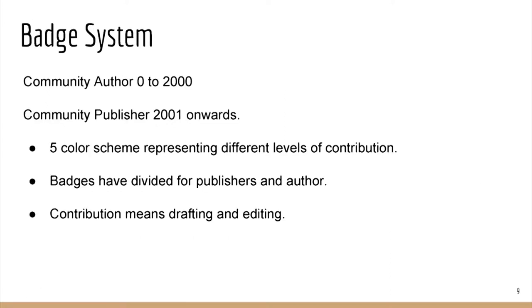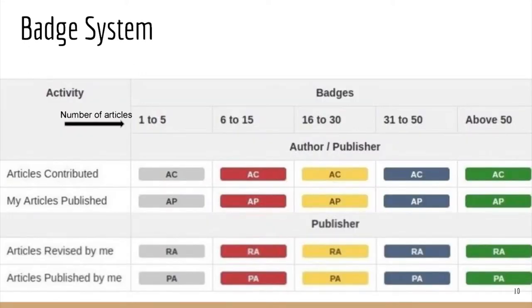Coming to the batch system — we implemented this to encourage users to contribute more. If a user's reputation ranges from 0 to 2000, they are considered an author; beyond 2000, they are considered a publisher. We used 5 colors to depict different levels of contribution, with values divided between publishers and authors. In the batch system table, columns represent the number of articles and rows represent the activity done by the user. For example, if a user contributed 20 articles as an author out of which 10 were published, they would get a yellow AC batch and a red AP batch.